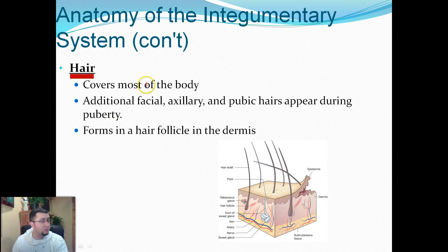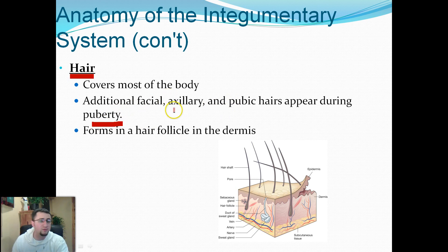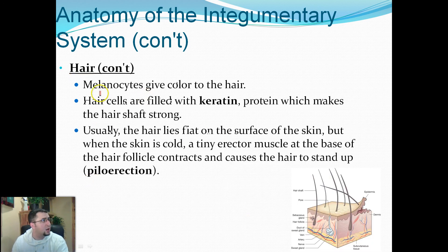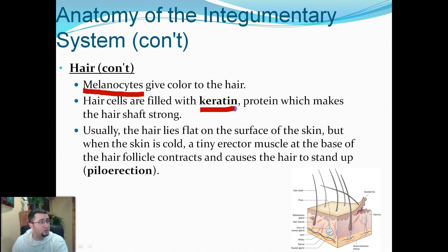Hair covers most of the body — everything except for the palms of your hands and the bottoms of your feet. When you go through puberty, additional hair can form in places it never was. Hair comes from a hair follicle which is anchored in the dermis. Melanocytes — those cells that produce melanin — give color to the hair. The more melanin you have, the darker your hair. These cells are also filled with the protein keratin, which makes the hair shaft strong.